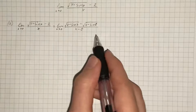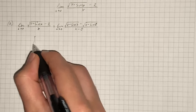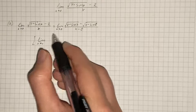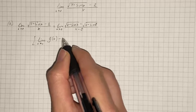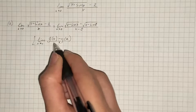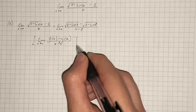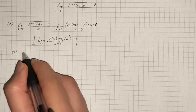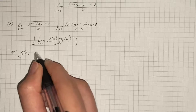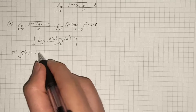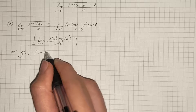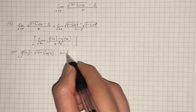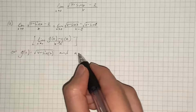Now we compare this with the definition: limit as x approaches a of [g(x) minus g(a)] over (x minus a). By comparing, we get that g(x) equals square root of (4 plus sine of x) and a equals 0.